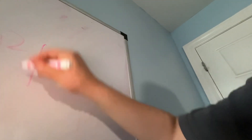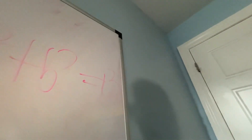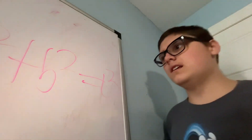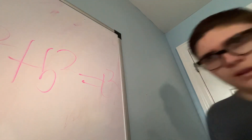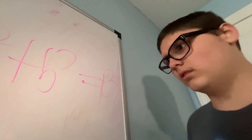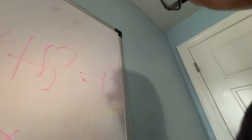On today's show, I am explaining the Pythagorean Theorem. A squared plus B squared equals C squared. It's teaching the size of a right triangle.